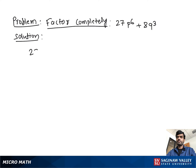Factor completely 27P^6 + 8Q^3. First we find out the common factor. There is not any common factor, so what we do is write both terms in the form of cube to make it easy to solve.